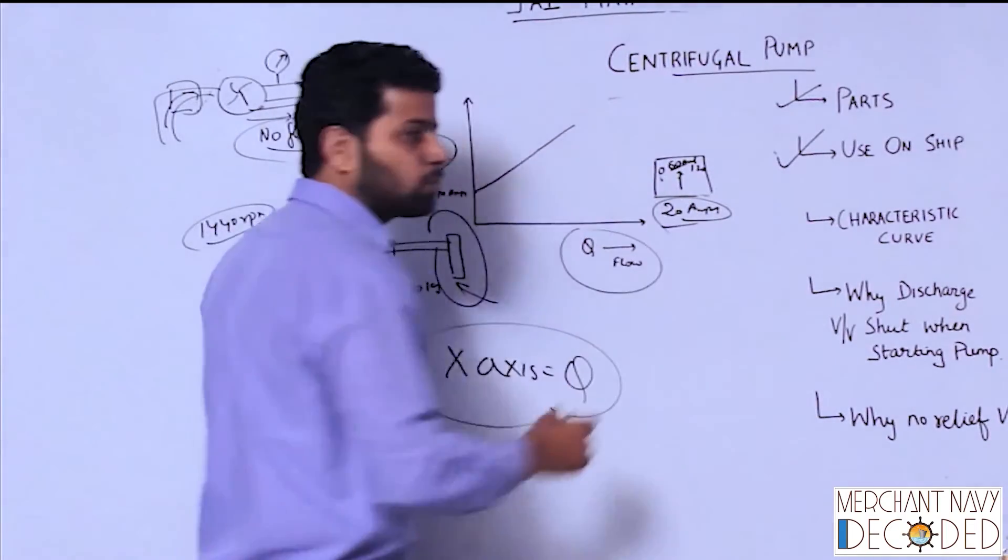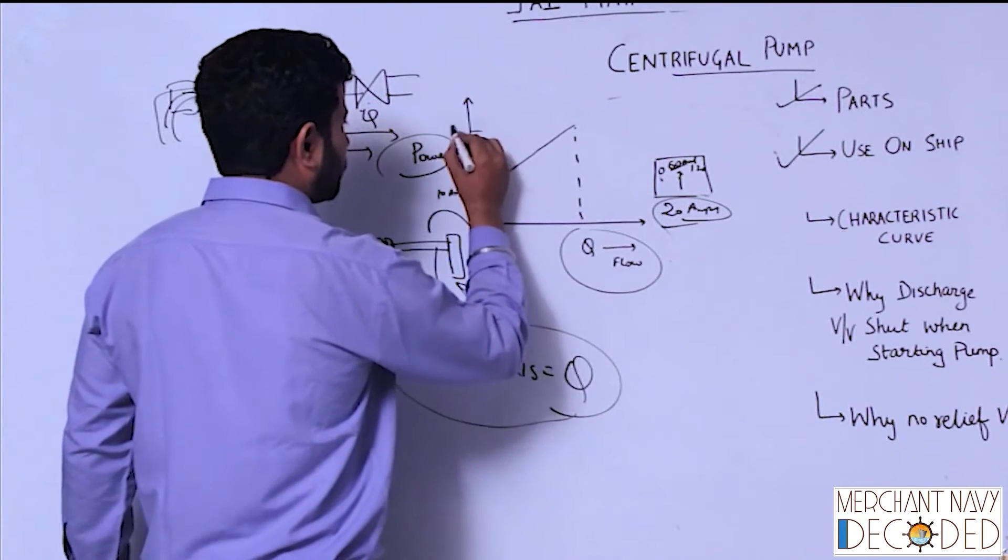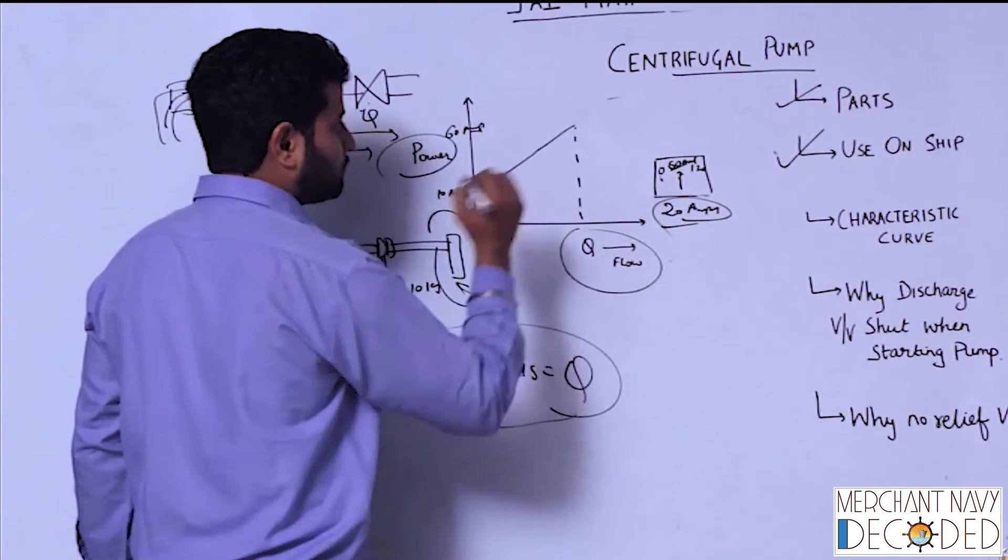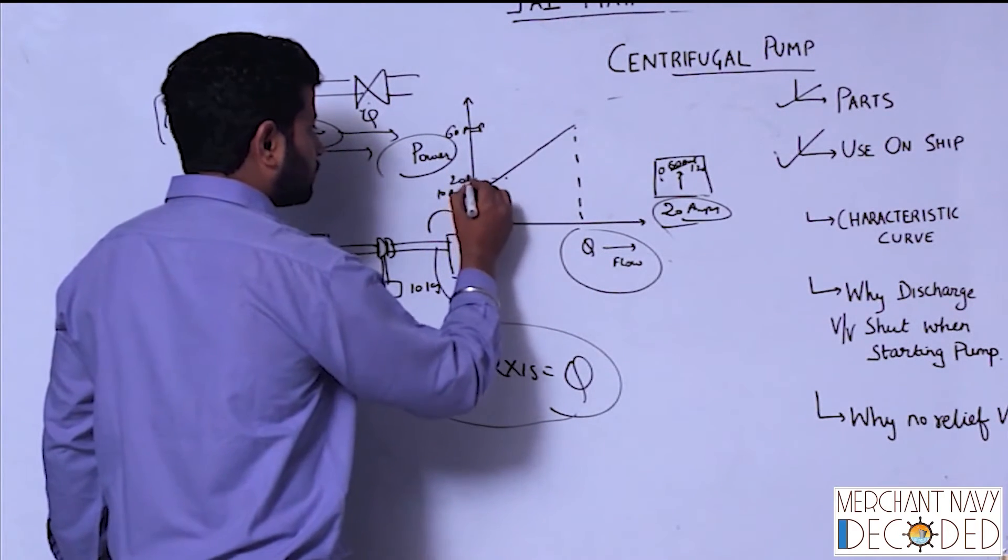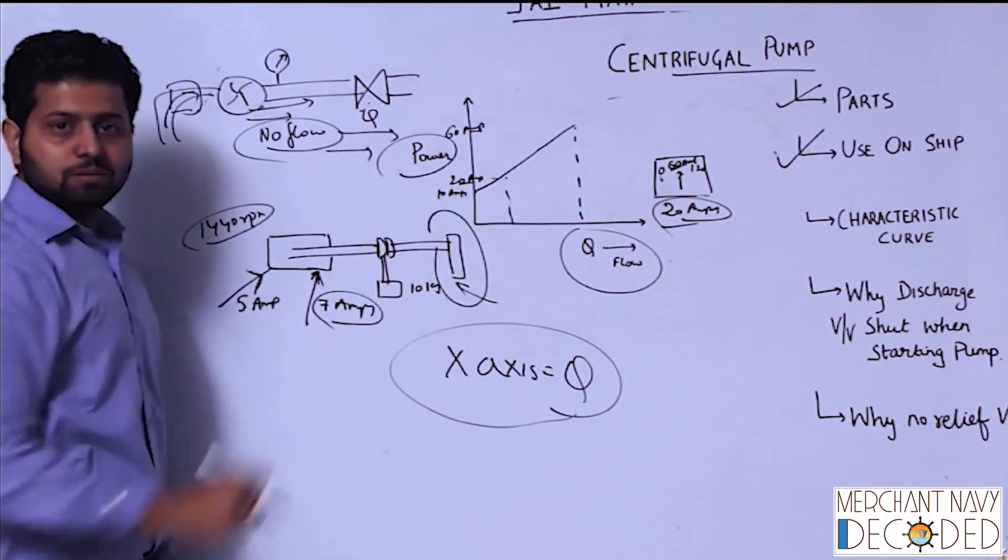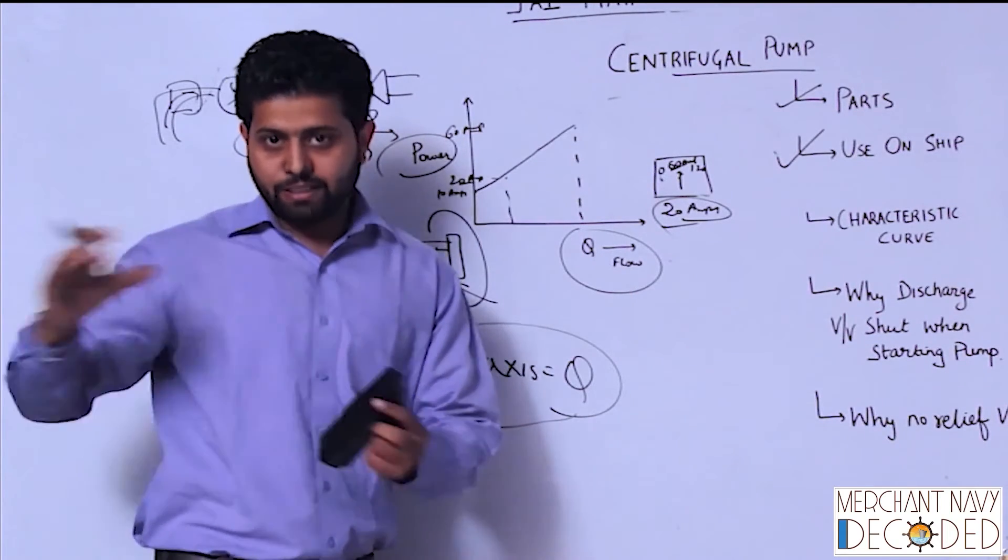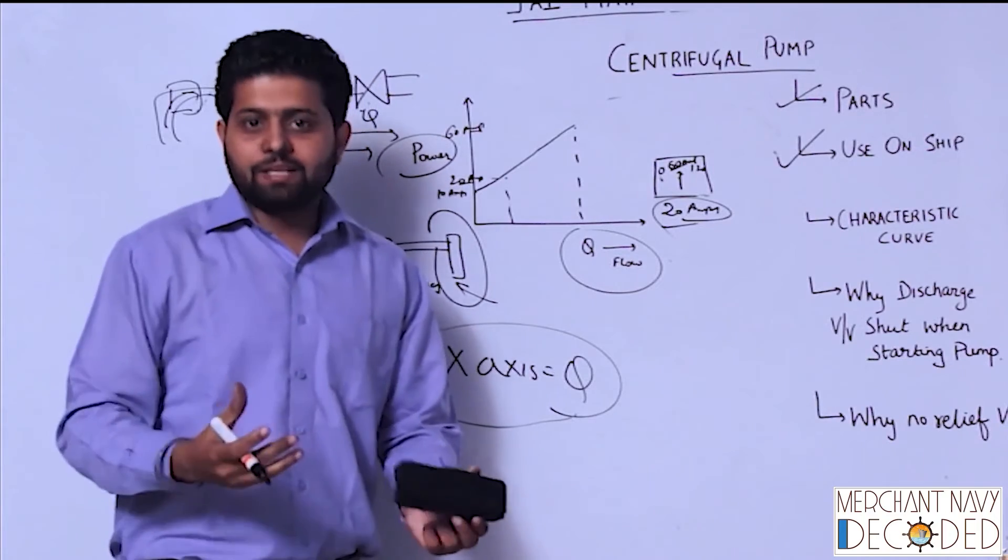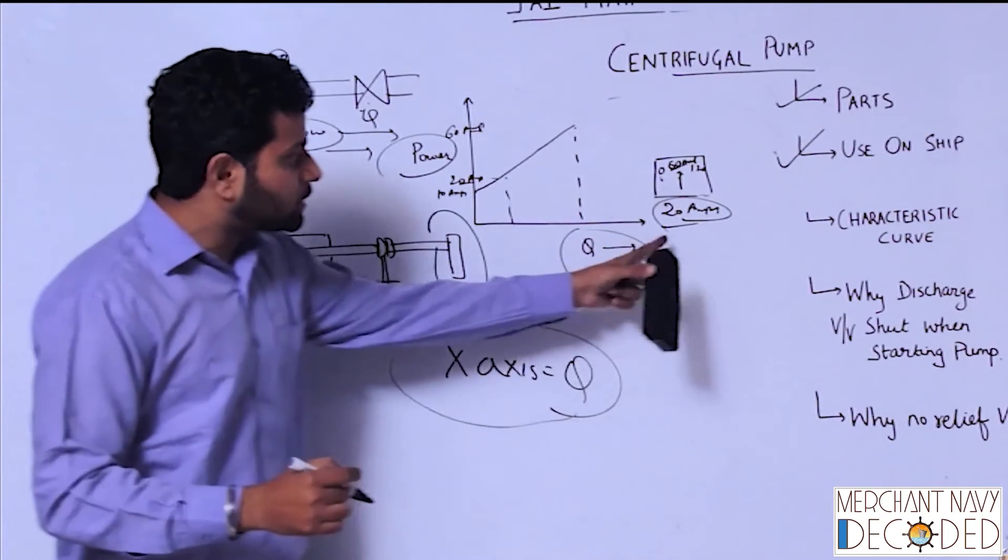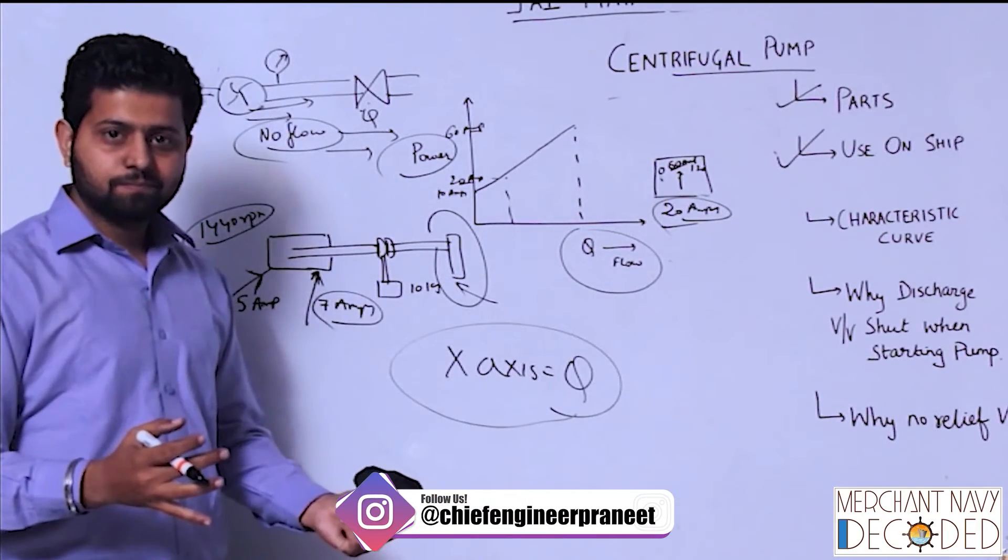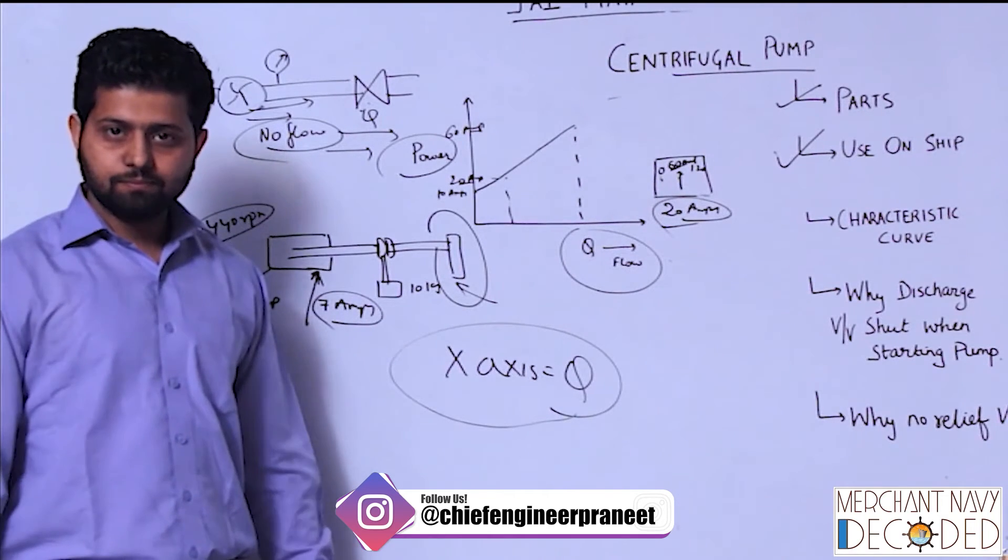From 60 amps it has become 20 amps because, say, it was taking 60 amps over here when Q was maximum, but suddenly you saw the filter has choked, there is no flow taking place. So if you are sitting, only if you know this thing, you know how it works. So centrifugal pump, flow matters. Clear guys?